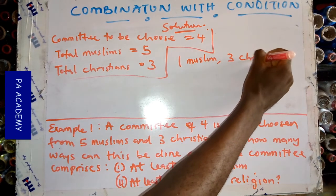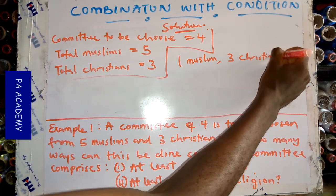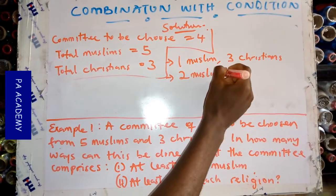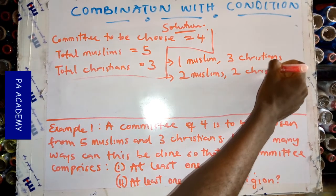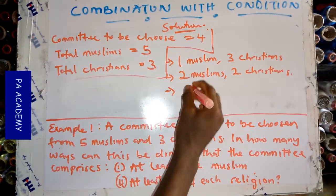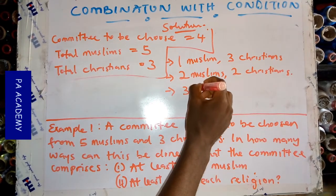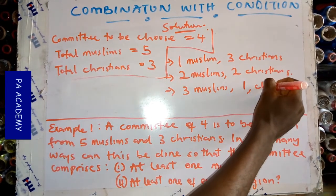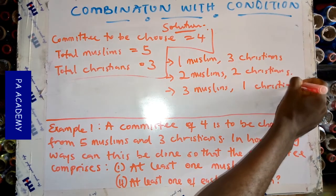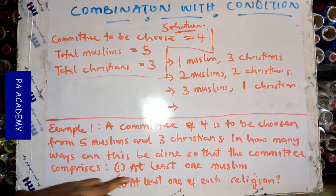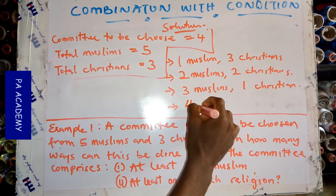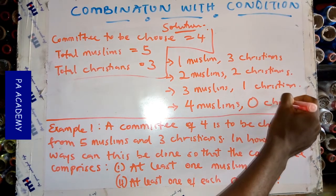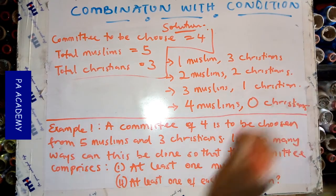We can also have two Muslims and two Christians. The third way is three Muslims and one Christian. The fourth way — and remember 'at least one Muslim' — is four Muslims and zero Christians. So those are the four possible combinations.